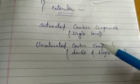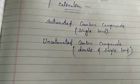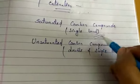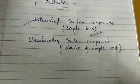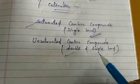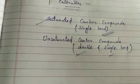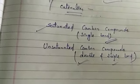Carbon compounds are of two types: saturated carbon compounds and unsaturated carbon compounds. When two carbon atoms are linked by a single bond, that is known as saturated carbon compounds. When two carbon atoms are linked by either a double or triple bond, they are known as unsaturated compounds.